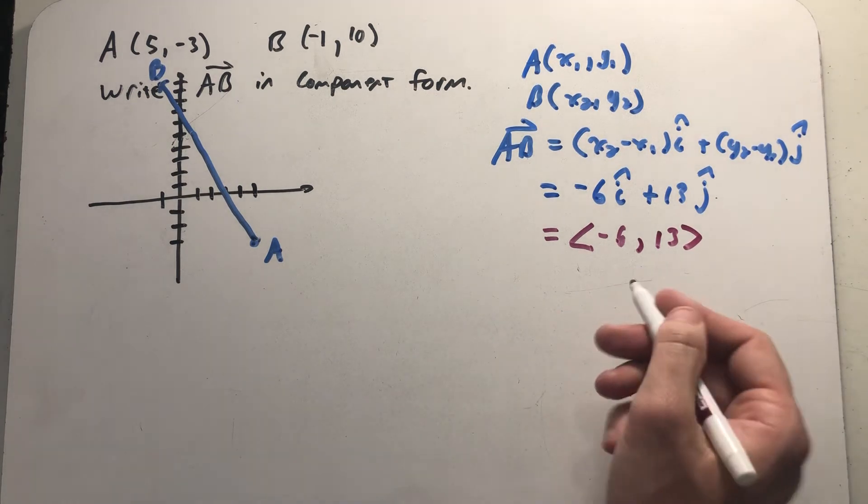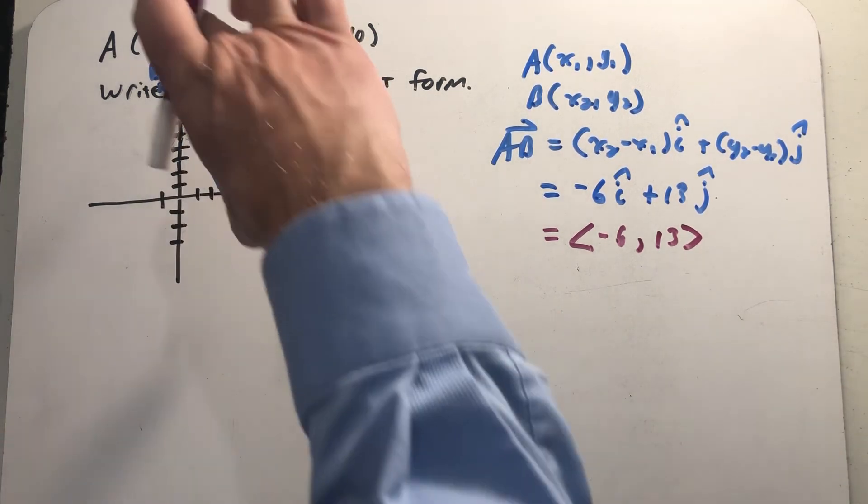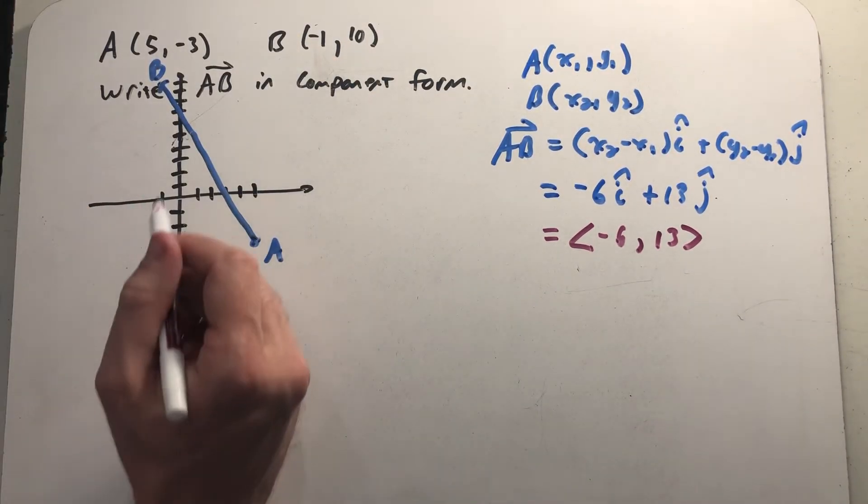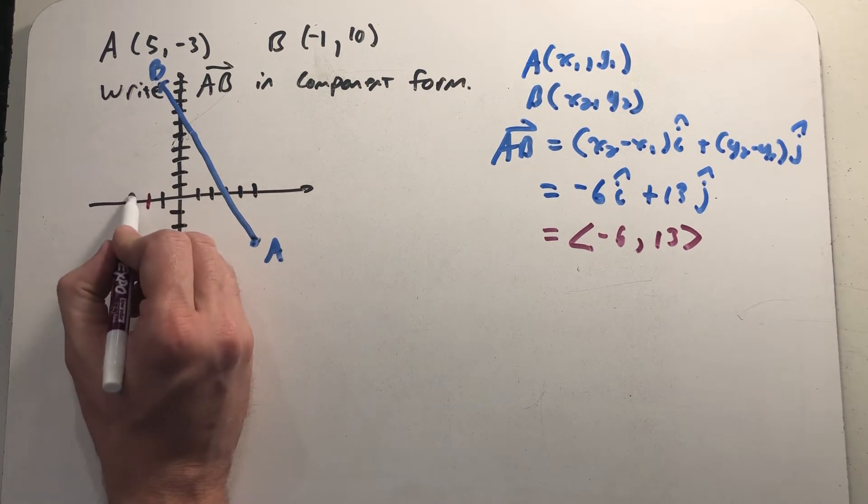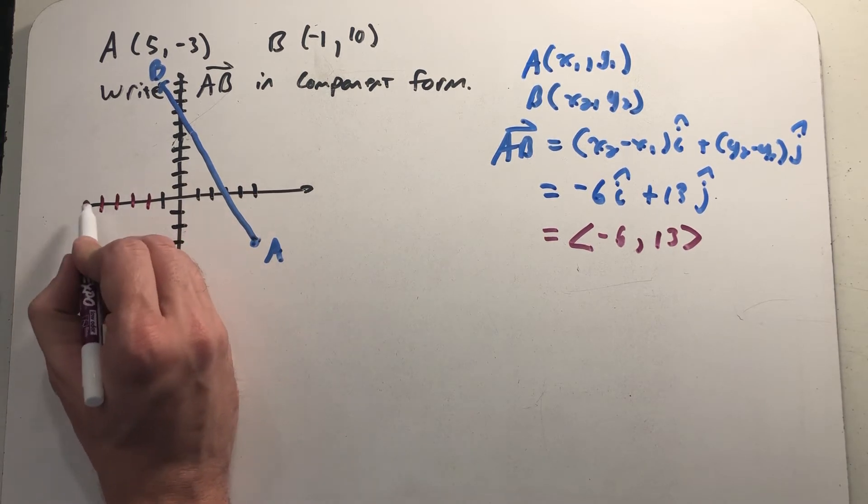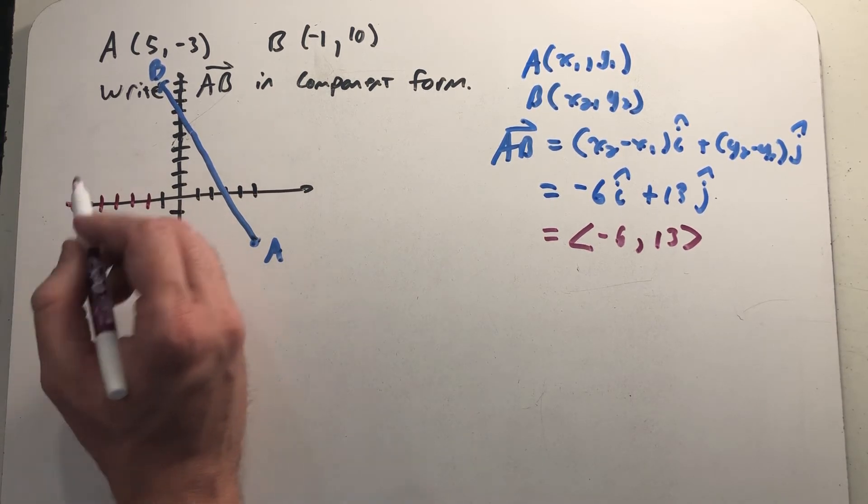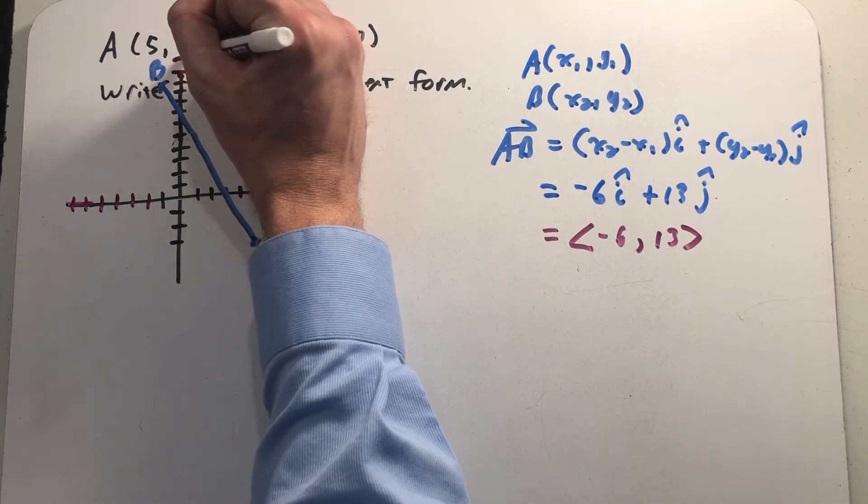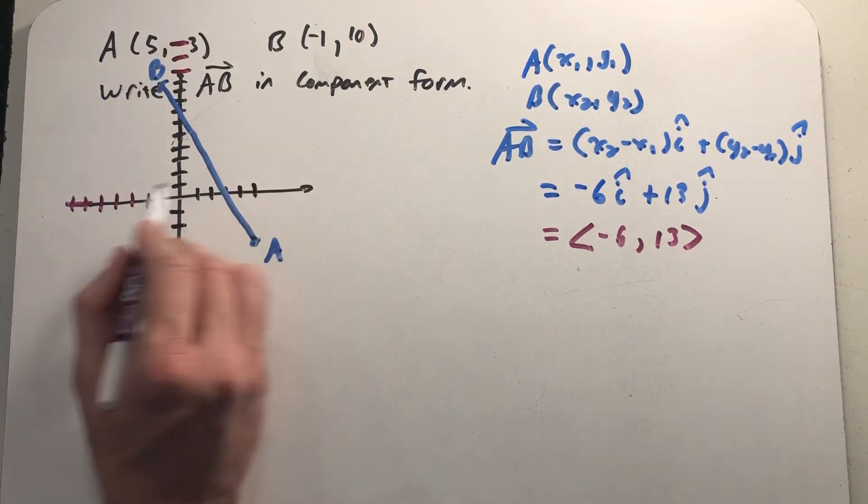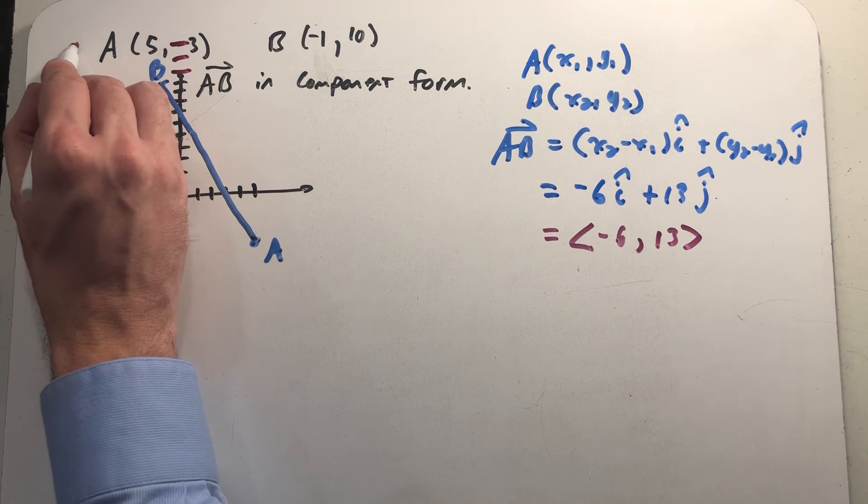All right, so I'm going to plot the point minus 6, 13, and think about having moved this vector to have an initial point of the origin. All right, so minus 6 and then 13.